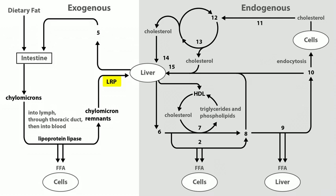The liver takes the chylomicron remnant and synthesizes a VLDL particle, secreted into circulation with the help of ApoB100. Without ApoB100, those particles don't leave the liver. VLDL is a very triglyceride-rich particle. As it circulates, cells use lipoprotein lipase to pull off fatty acids, shrinking it into IDL — the intermediate density lipoprotein. IDL circulates further and is degraded into LDL through hepatic triglyceride lipase (hepatic lipase), which is produced in the liver.